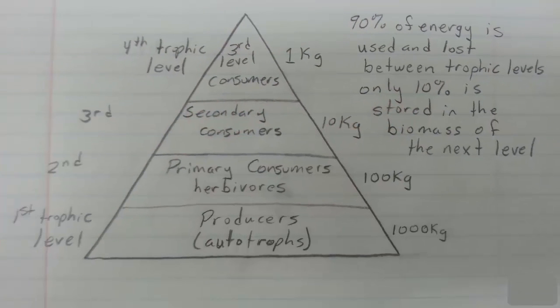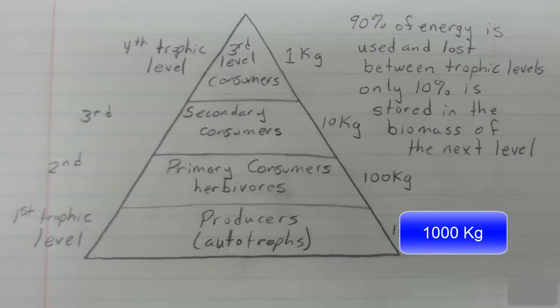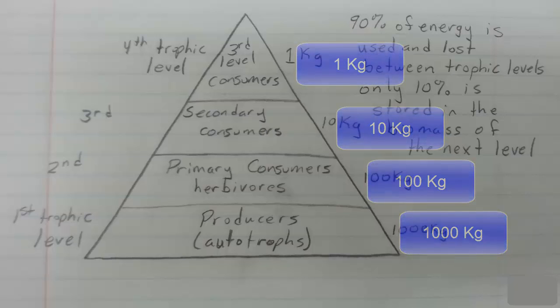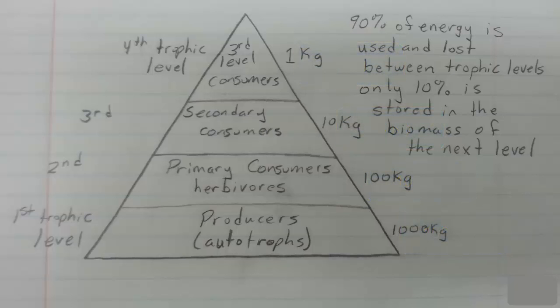So in this example, if you look at trophic level 1 with 1,000 kilograms of biomass, that biomass would only be able to support 100 kilograms at the second trophic level. The third trophic level would only be able to support 10 kilograms, and the fourth trophic level would only be able to support 1 kilogram of biomass.